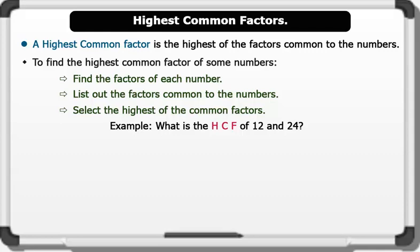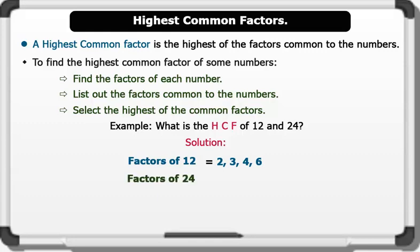What is the HCF of 12 and 24? Solution. We first find the factors of each number. Therefore, the factors of 12 are 2, 3, 4, and 6. The factors of 24 are 2, 3, 4, 6, 8, and 12.